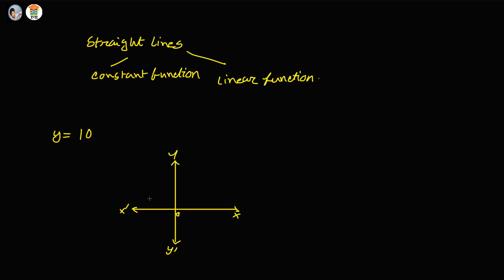This is a four-quadrant diagram. Here, y is always equal to 10. That means if x is equal to 0, y is equal to 10. If x is equal to 1, y is equal to 10. If x is equal to 2, y is equal to 10. So this will be a straight line.